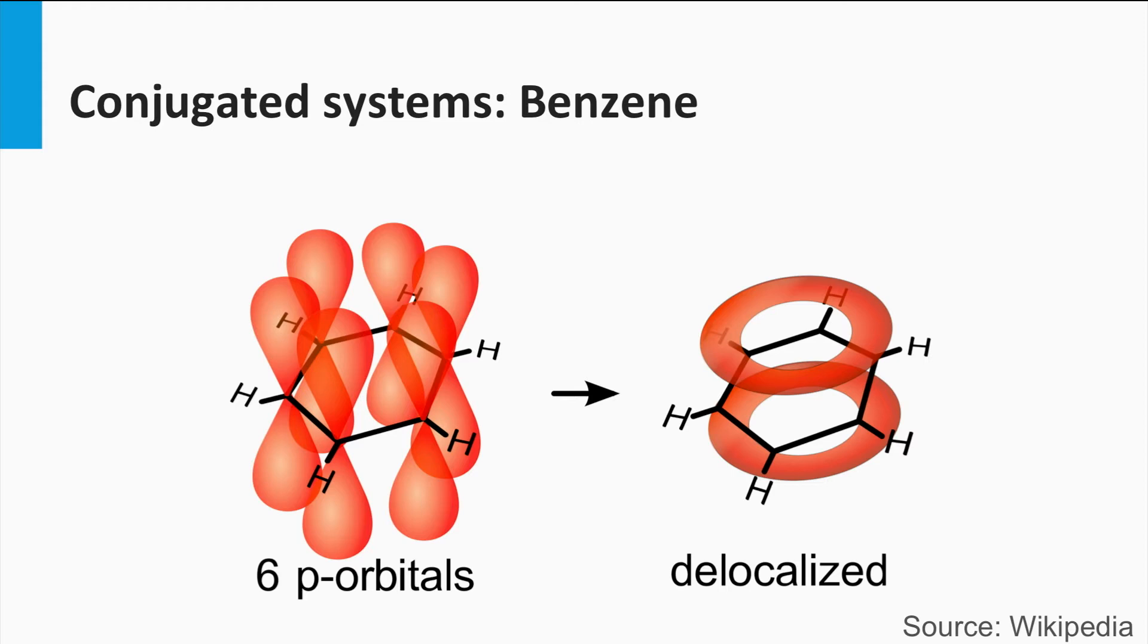This molecule has six carbon atoms and six p orbitals. They mix forming two circular orbitals that are occupied by, in total, six electrons. These electrons do not belong to one single atom, but to a group of atoms.